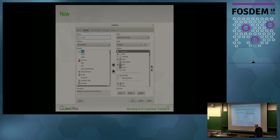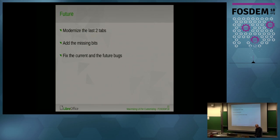Our work is not finished and we will continue by modernizing the last two tabs: keyboard and the events tab. We will also add the missing bits on the already modernized tabs. For example, the menus, toolbars, and context menus tabs don't have a customize button to rename the selected toolbar or menu. We will also try to fix current bugs and arising bugs in the future.